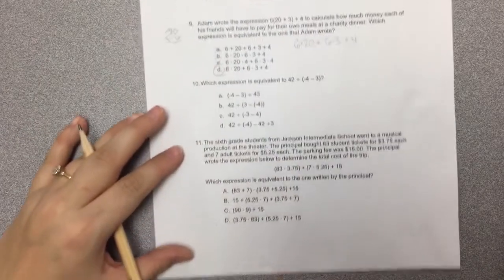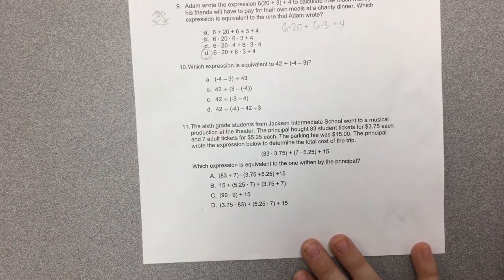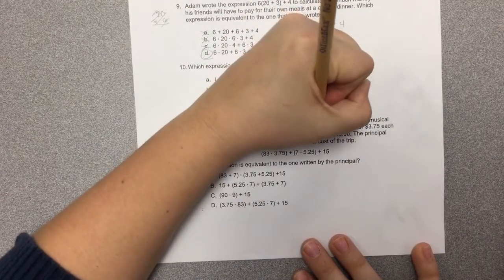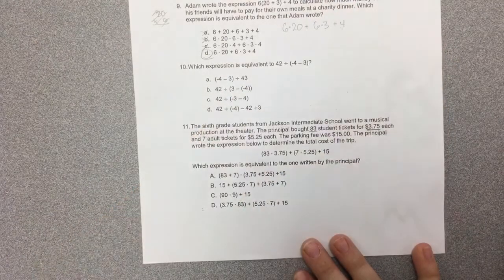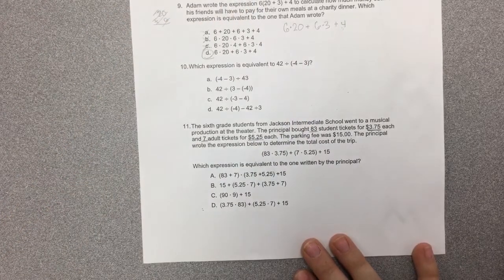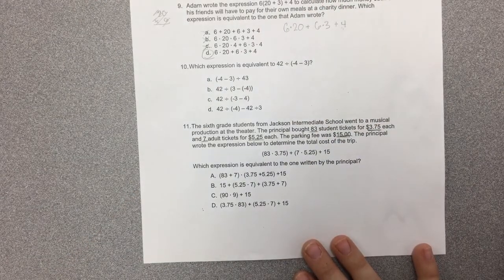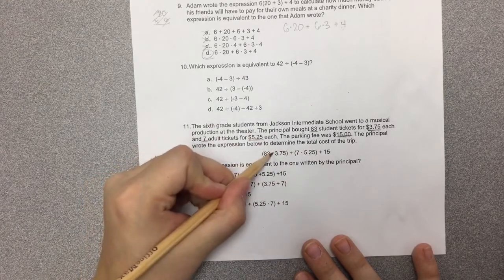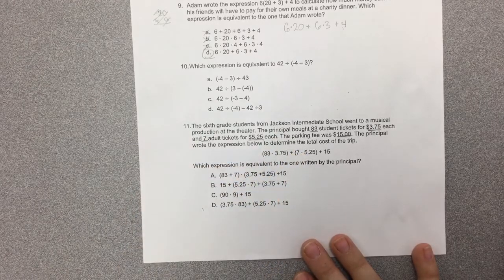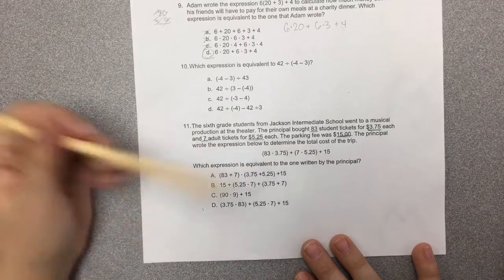Okay, I'd like to read through and at least help you think about what number 11 is saying. The sixth grade students from Jackson Intermediate School went to a musical production at a theater. The principal bought 83 student tickets for $3.75 each and 7 adult tickets for $5.25 each. The parking fee was $15. The principal wrote the expression below to determine the total cost of the trip: 83 multiplied by $3.75 plus 7 times $5.25 plus the $15 parking fee.